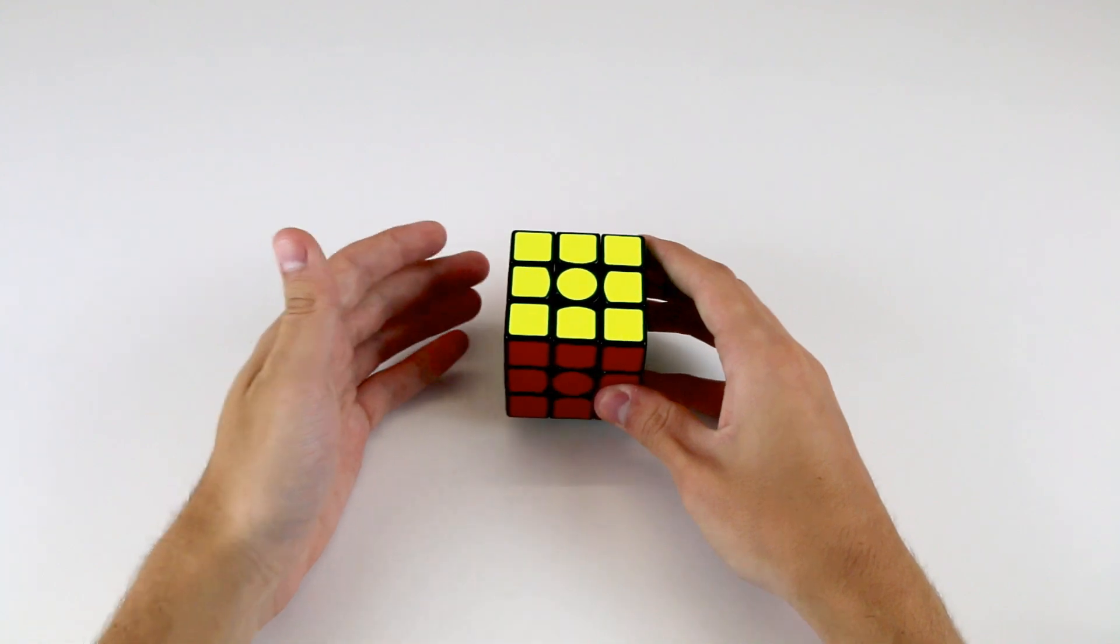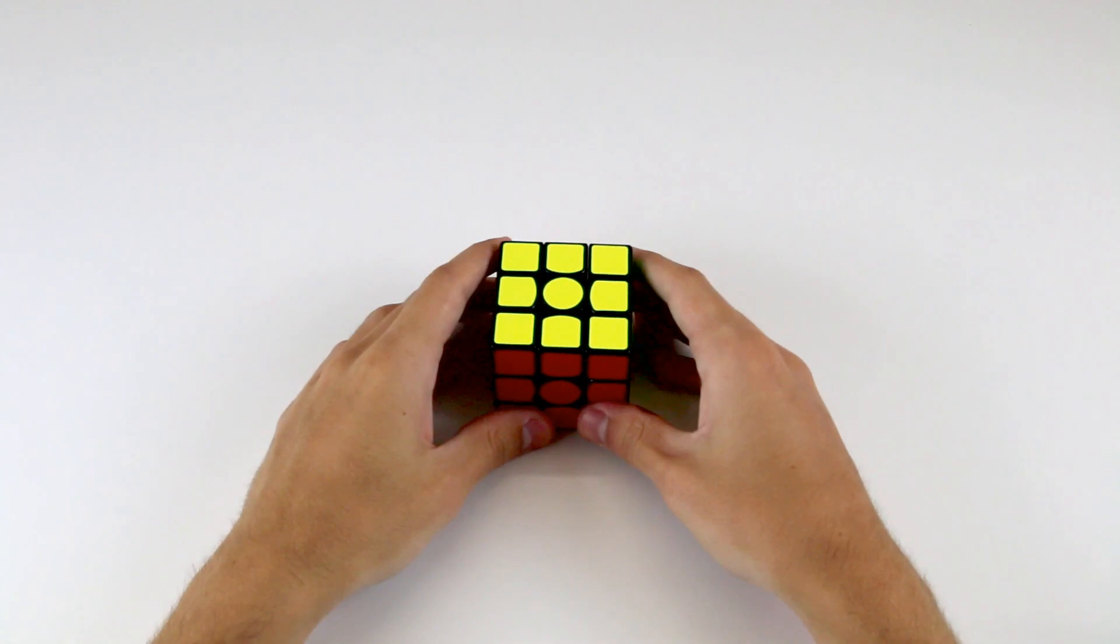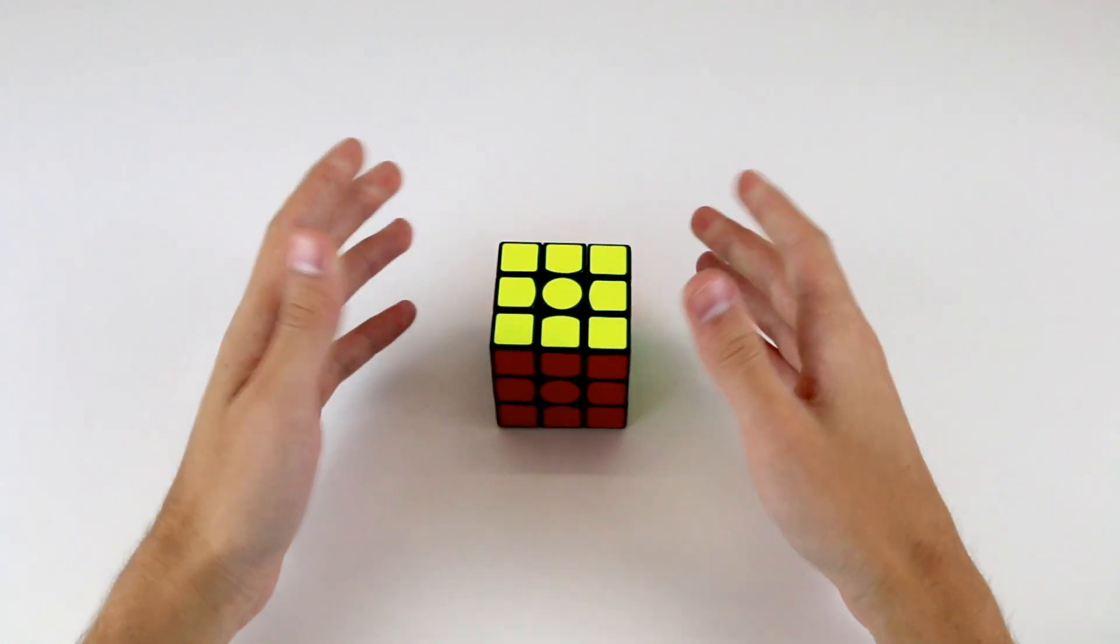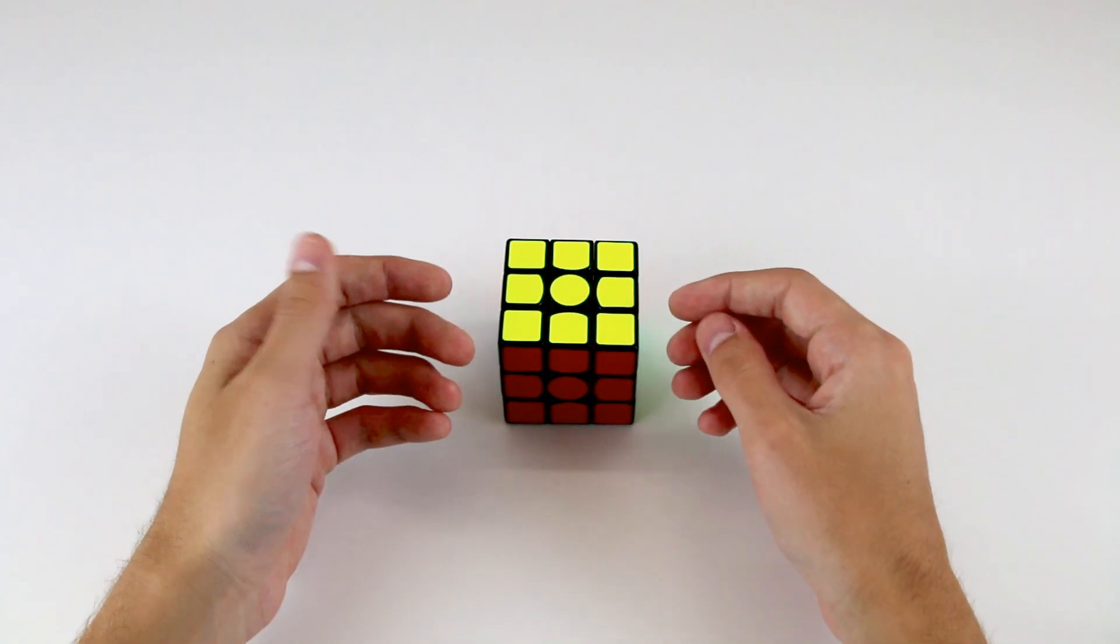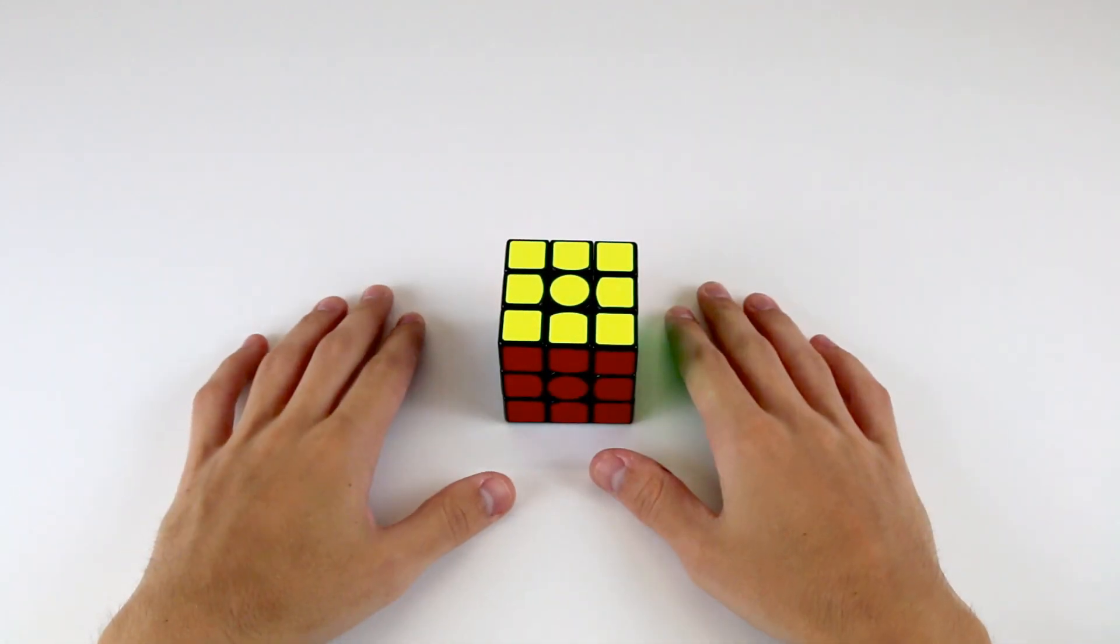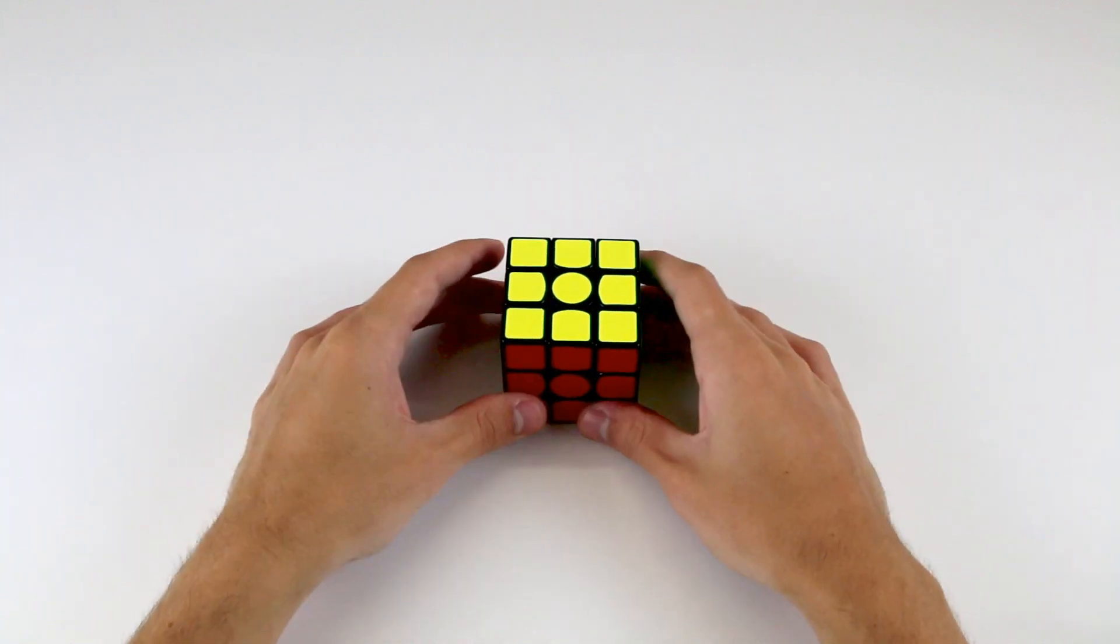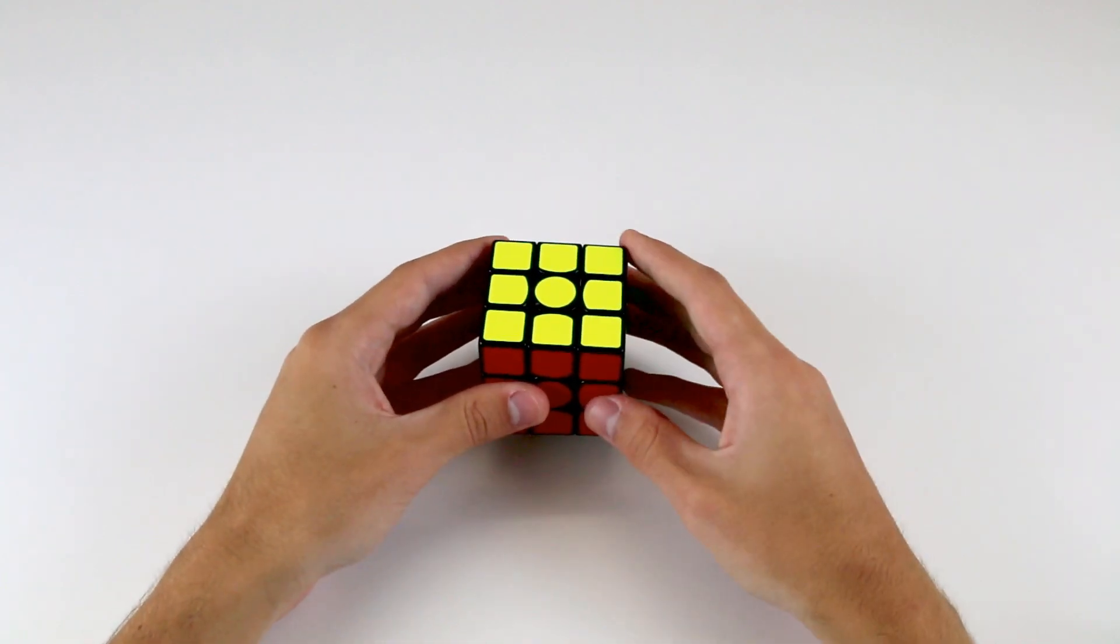A crucial component to solving the Rubik's Cube is the use of what are called algorithms. Now upon first impression, this term may seem frightening, but algorithms are quite simple. They're sequences of moves which transform the cube from one state to another, aimed at achieving a particular result or outcome.